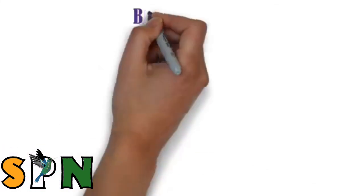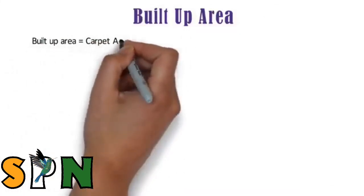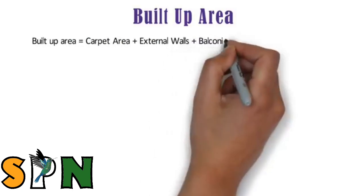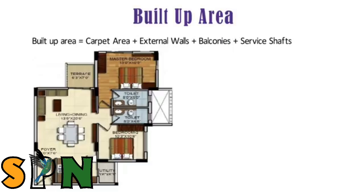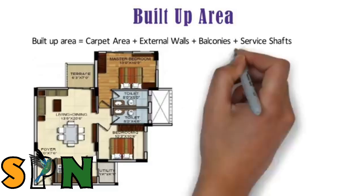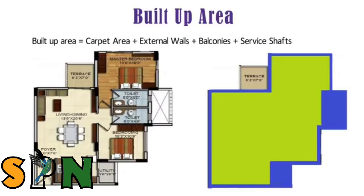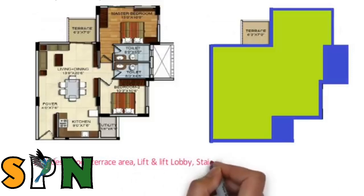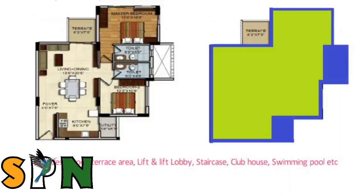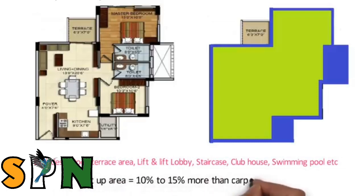Now let us discuss built up area. Built up area includes the carpet area, external walls, balconies and service shafts. This plan of the 2BHK flat shows the carpet area in green color, while blue color is added for external walls, balcony and service shaft — all of which comprise the built up area. Built up area excludes open terrace area, lift and lift lobby, staircase, clubhouse and swimming pool. Roughly, built up area is approximately 10 to 15% more than carpet area.